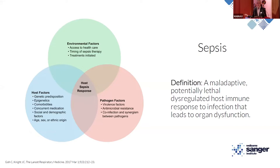We deal with complex traits, and we also have to deal with the environmental factors of the clinic itself, such as the acute treatment that we give to patients, and any pathogenic factors, such as if it's a viral or bacterial infection. All of these coalesce to create the complex host immune response that we see in sepsis.